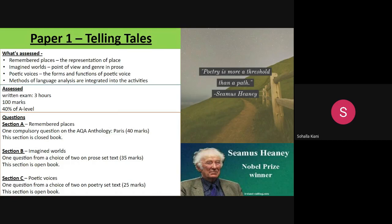Section A is called Remembered Places and you'll be exploring non-fiction texts based around the city of Paris. Section B I teach and I'll be exploring Frankenstein by Mary Shelley. The final section is called Poetic Voices and again I teach it — I'll be looking at the poetry of Seamus Heaney.